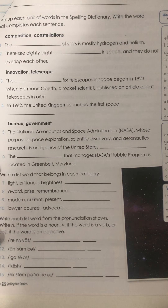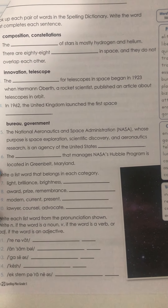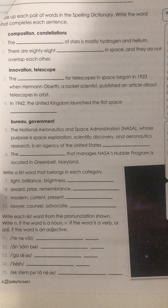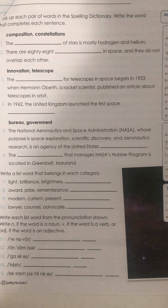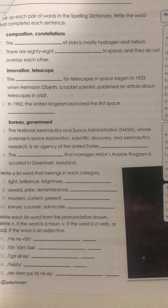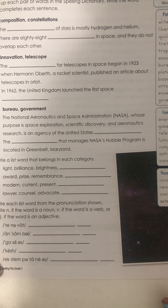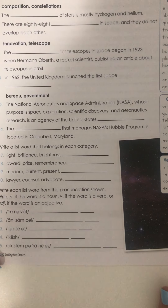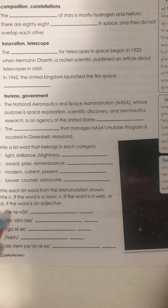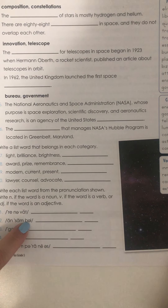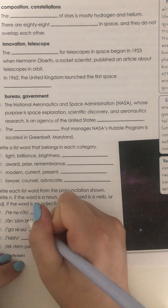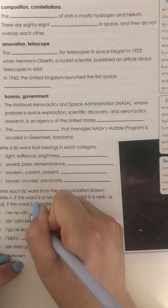At the bottom you will be writing a list word that belongs in the category. For example, in the category of meaning: light, brilliance, brightness — what list word would be in the same category? Then at the bottom you're going to write each list word from the pronunciation. Remember that the upside-down E's are pronounced like a short U — the schwa — and that will help with your pronunciation.